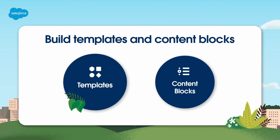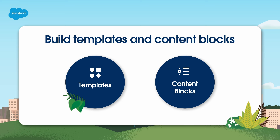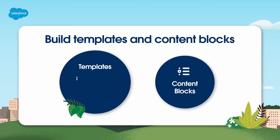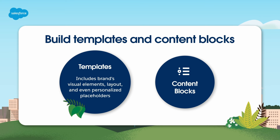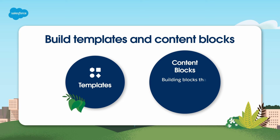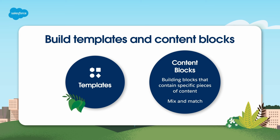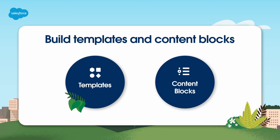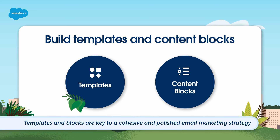Build a set of pre-designed templates and reusable content blocks to ensure consistency and efficiency in your email campaigns. Templates can include your brand's visual elements, layout, and even personalized placeholders. Content blocks are like building blocks that contain specific pieces of content, and it's easy to mix and match them within your templates. This approach saves you time and maintains a consistent look and feel across all your emails, ensuring every email you send is on-brand and well-structured.